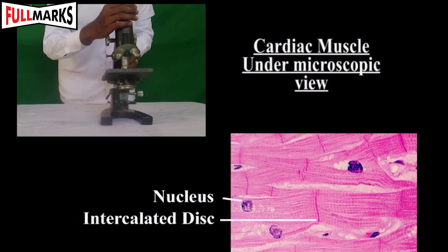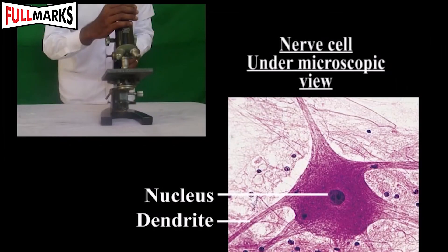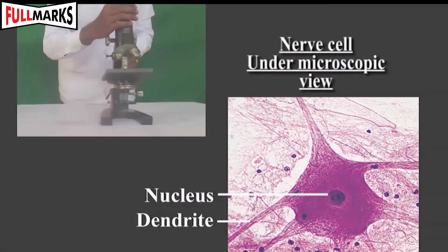Nerve cell: The nerve cell has a neuron with a large body called the cytone. The cytone has a prominent nucleus. It has projections called dendrites, and one of the dendrites which is long is called the axon. The nerve endings are attached to muscles.